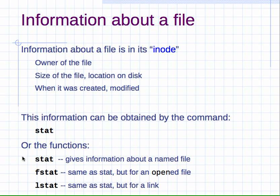There are three main C functions: `stat`, `fstat`, and `lstat`. We'll use `lstat`. The reason is that `stat` gives information about a named file, but if you have a symbolic link, `stat` actually goes through all those levels of indirection to find the ultimate file and gives you information about the destination.